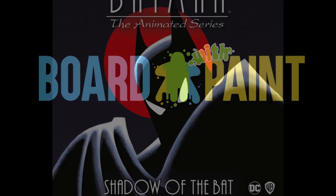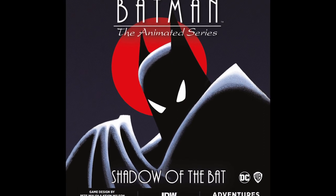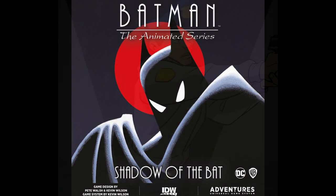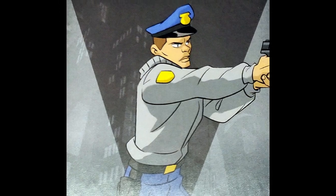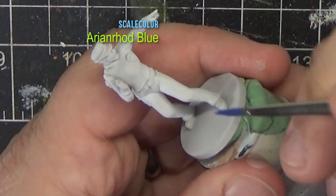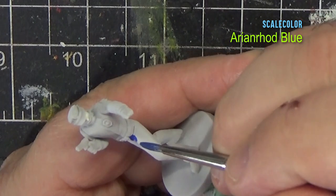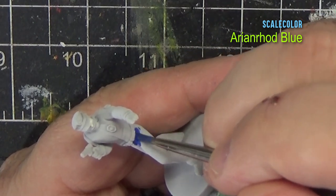Hello, welcome to Bored With Paint. Today we'll be continuing our series of painting Batman: The Animated Series Shadow of the Bat, and this time we will be doing the beat cops. Once again, we'll be going for a sort of cell-shaded style to match the artwork of the animated series and the game. Here I'm starting with a base color of Aryan Rod Blue from Scale Color.